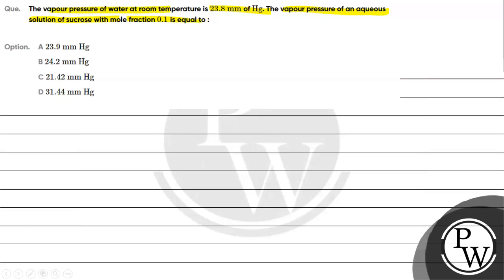Option B, 24.2 mm Hg. Option C, 21.42 mm Hg. Option D, 31.44 mm Hg. The key concept for this question...